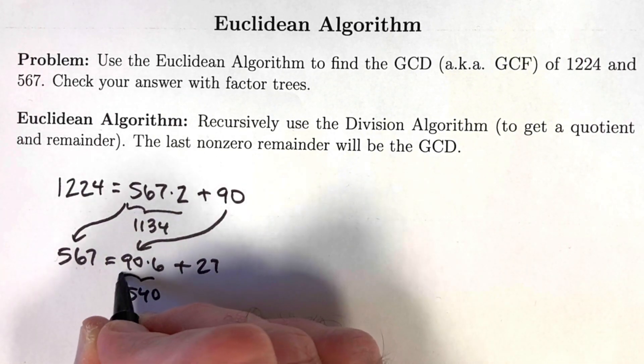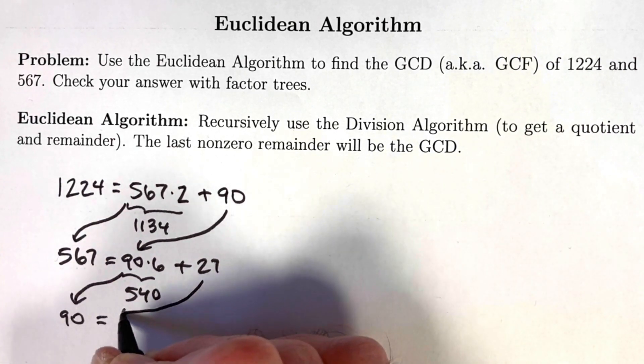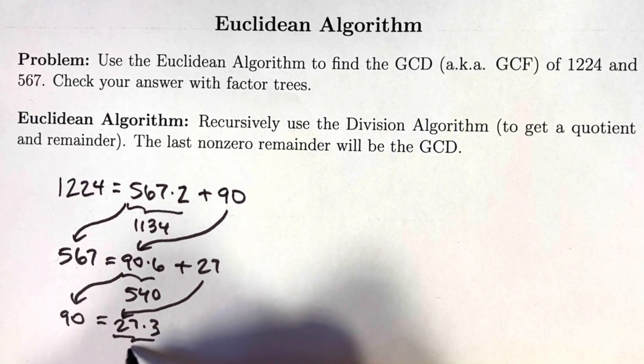Continue that process. Take the 90 and divide it by 27. 27 goes into 90 three times. 27 times 3 is 81, with a remainder of 9.